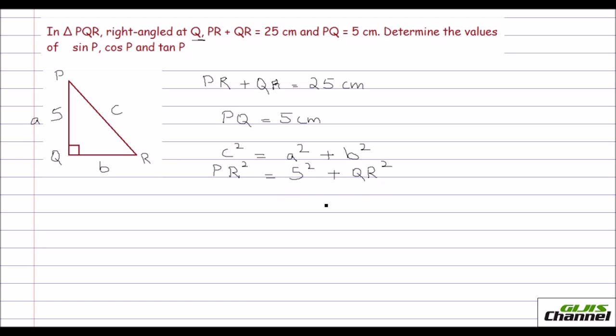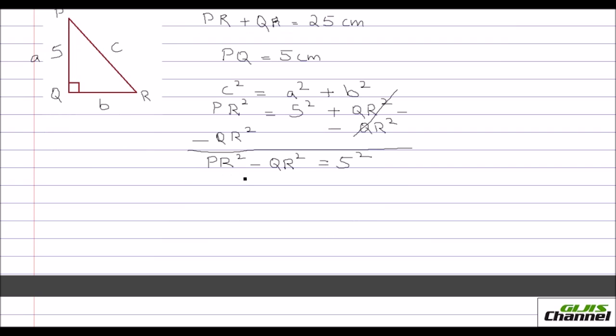Let me bring the QR to this side. So you subtract QR from both sides. What do you have finally? Here this side you have PR squared minus QR squared is equal to 5 squared. Because this QR plus QR and minus QR will get cancelled. So now, this PR squared and QR squared, you can take it as a squared minus b squared, right. This PR squared minus QR squared is in the form a squared minus b squared.